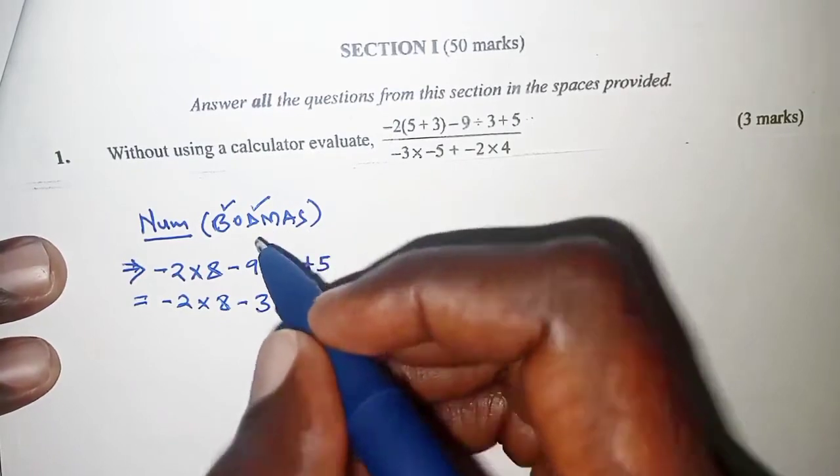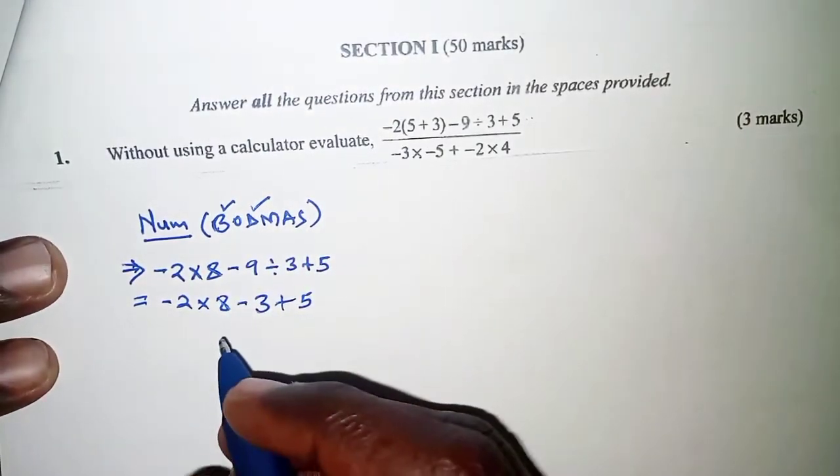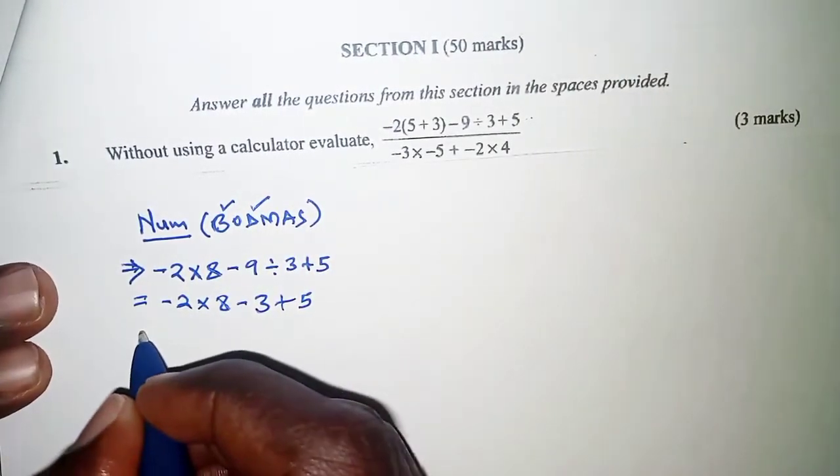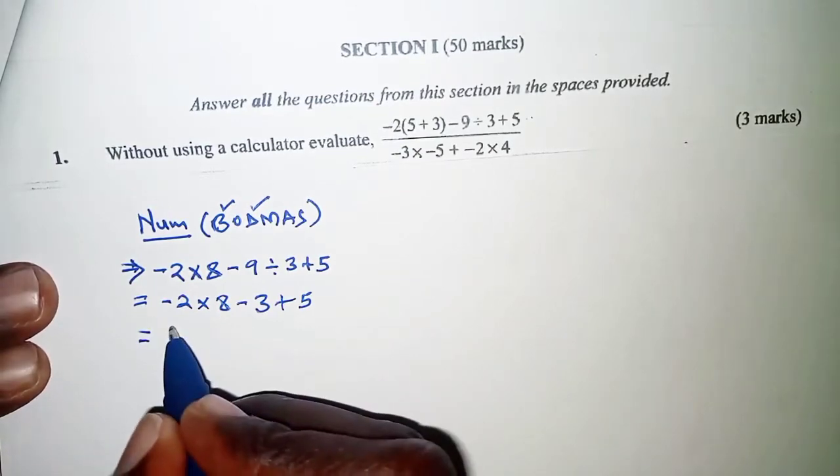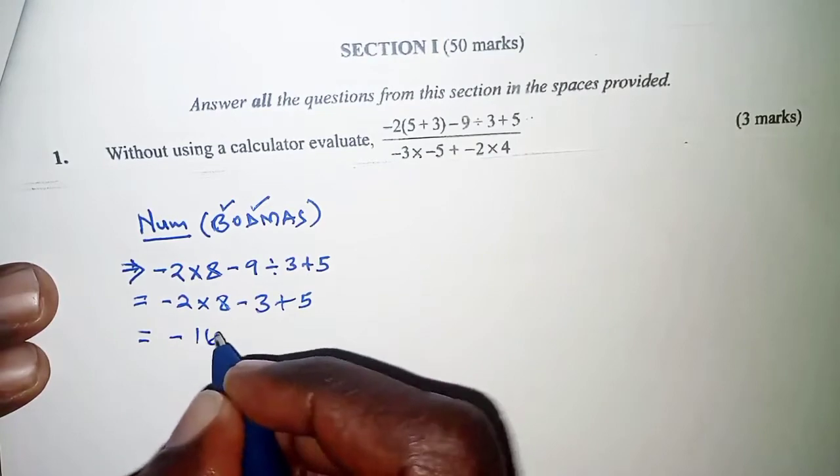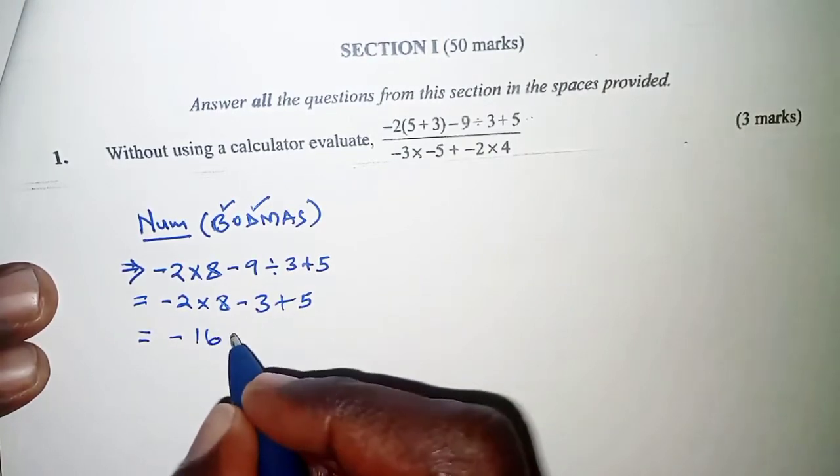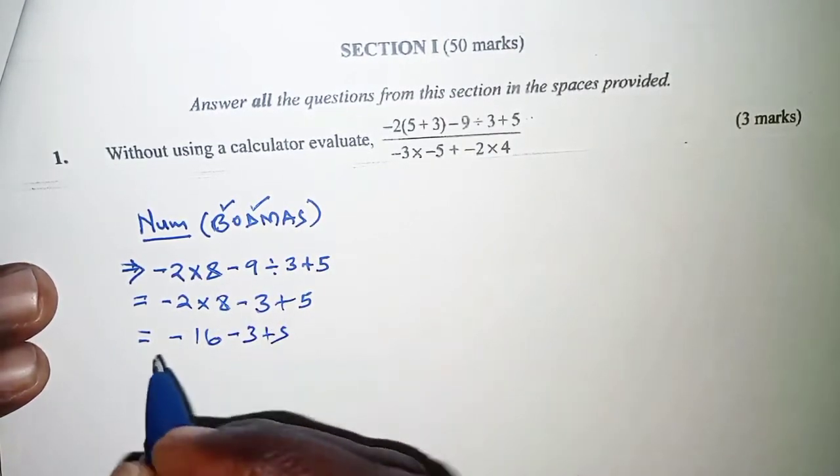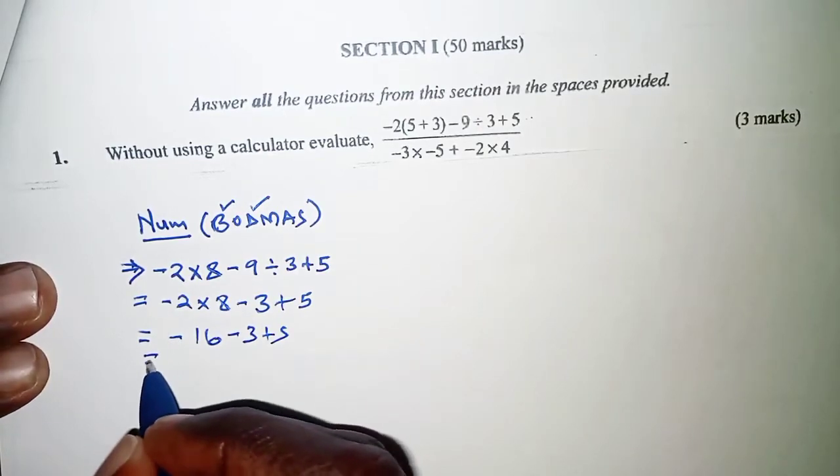Once we're done with the division, let's check if multiplication is there. Yes, we have multiplication. So we multiply next. Negative 2 by 8, negative 16. And then we have minus 3 plus 5.